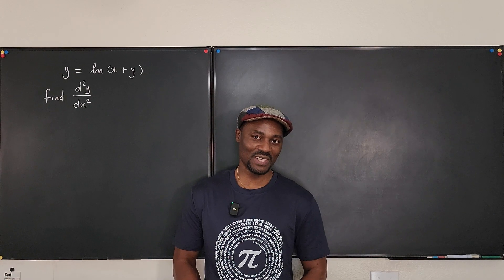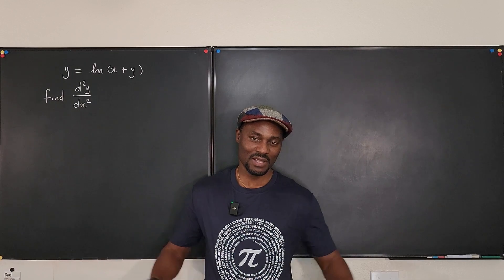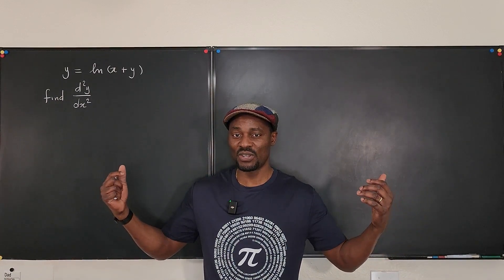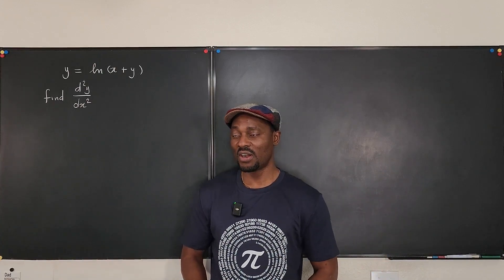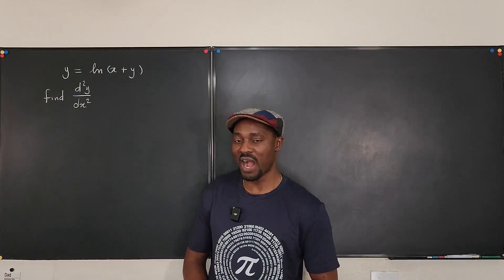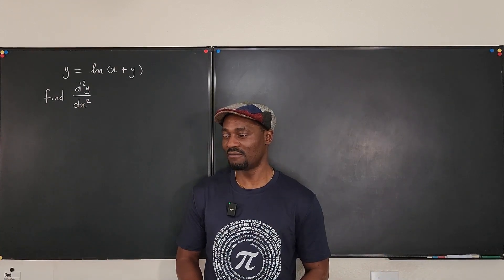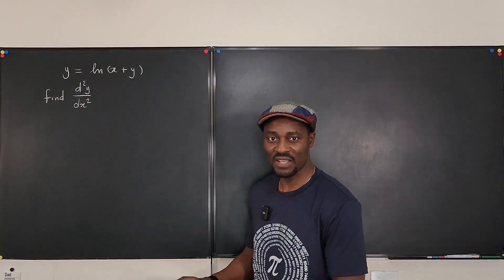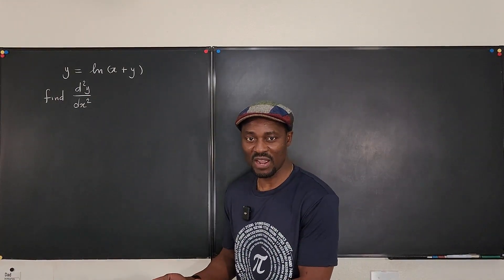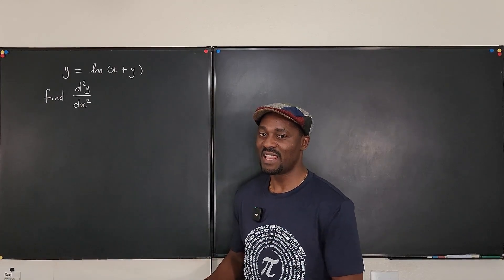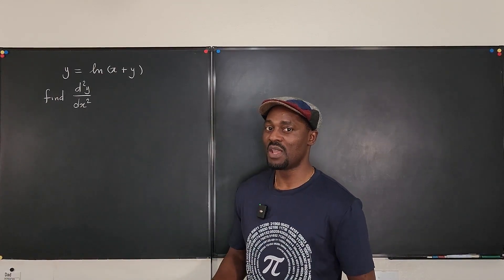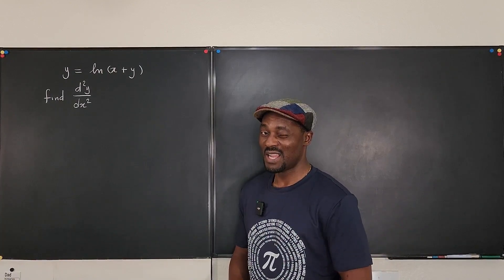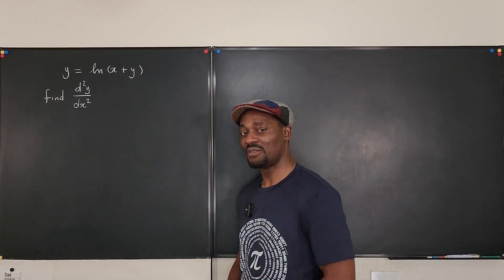Welcome to another video. We're going to do implicit differentiation and take the second derivative of y. We'll start from the basics: take the derivative, isolate y prime or dy/dx, then take the derivative a second time and apply any relevant rules. Let's get into the video.